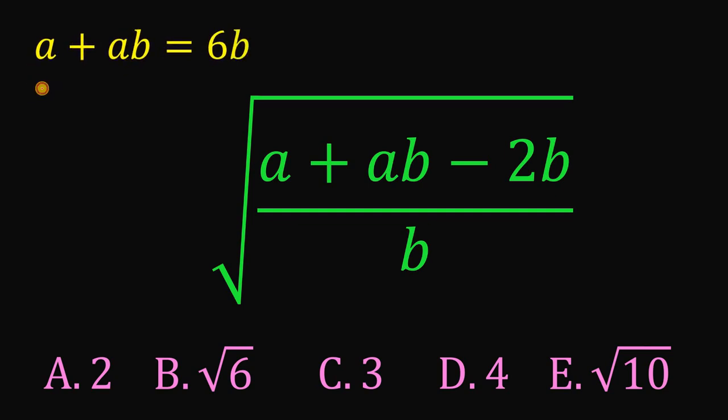If we do that, we get a plus ab equals 6b. Now, notice, on the expression that we want to evaluate, we have also a plus ab. And we know this is equal to 6b.